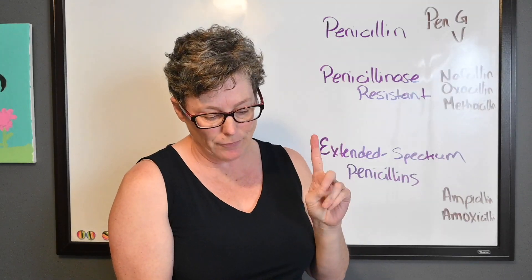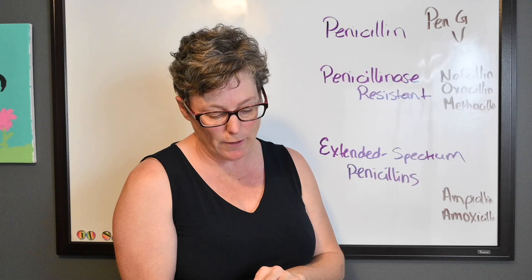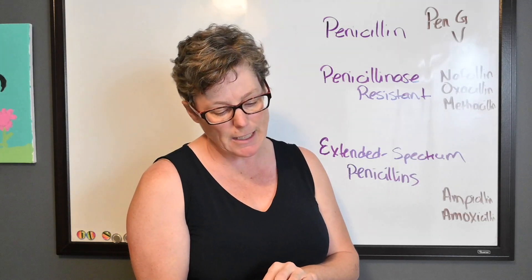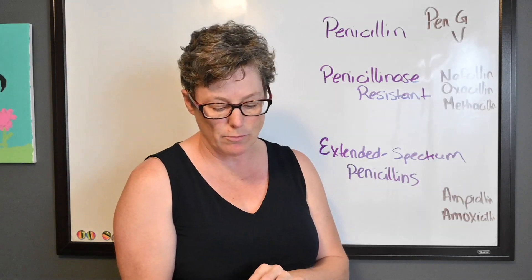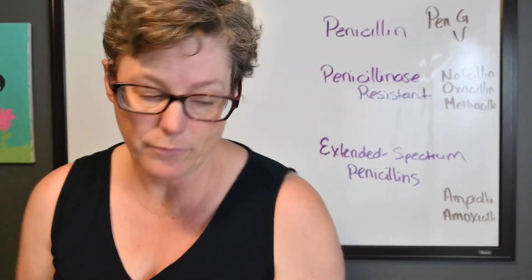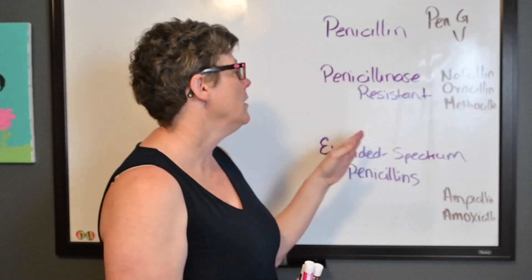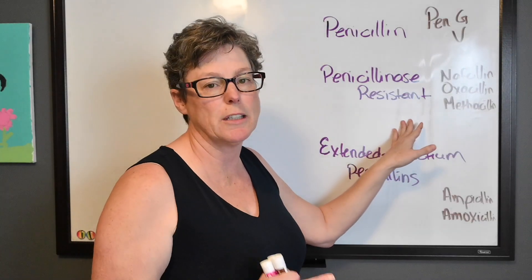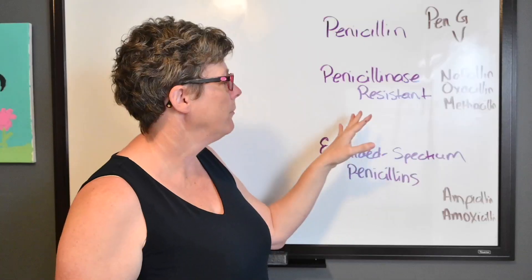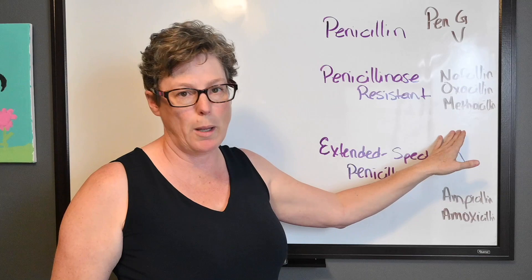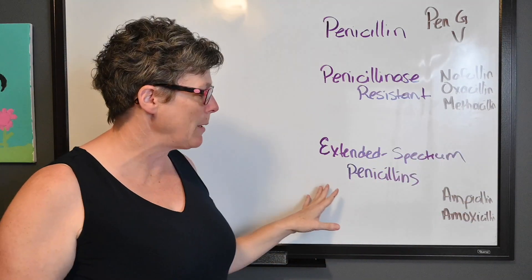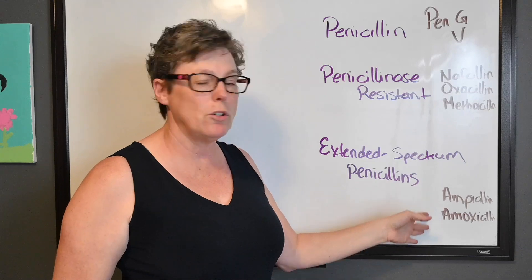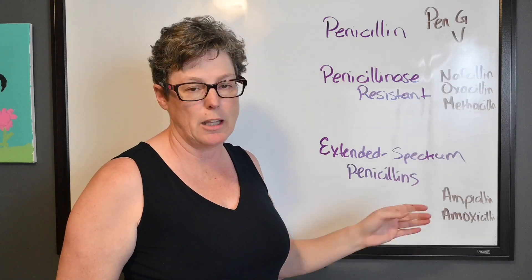Penicillin V is used for pneumococcal infections, streptococcal infections, and Vincent infection, just to name a few. The penicillinase-resistant antibiotics still target gram-positive skin infections with no gram-negative coverage. It's the extended-spectrum penicillins that cover both gram-negative and gram-positive, such as UTIs and E. coli infections.